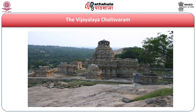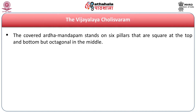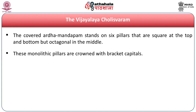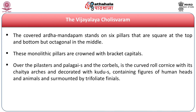The west-facing temple has Asta Parivara Devalas or eight sub-shrines all around the main shrine, with the Prahara wall almost in a ruined condition. The covered Ardhamandapam stands on six pillars that are square at the top and bottom but octagonal in the middle. As in the Pallava pillars, these monolithic pillars are crowned with bracket capitals, over the pilasters, the palagai or plank, and the corbels carved with rolled cornices with chaitya arches, decorated with kudus and containing figures of human heads within the kudu, and surmounted by a finial. There are the usual rows of Bhuta Ganas.